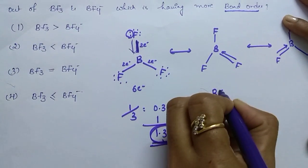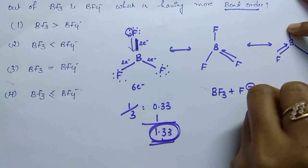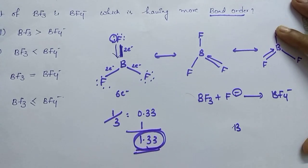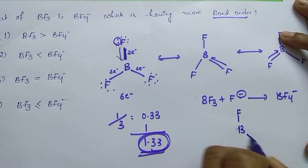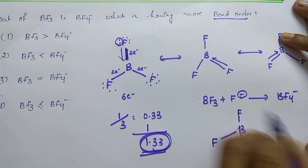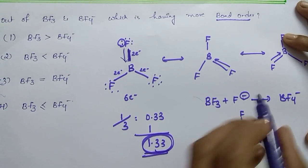Coming to the BF4 minus means whenever BF3 combines with fluoride ion, we get this BF4 minus. This is stable because around boron, how many fluorines are there, students? 4 fluorines are there. Whenever 4 fluorines are there, after bonding actually, BF3 after bonding with F minus, it is having how many electrons?